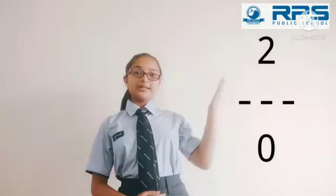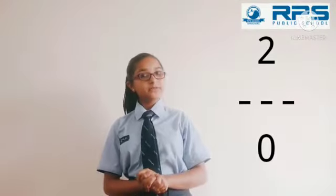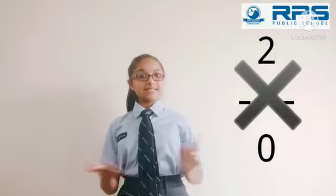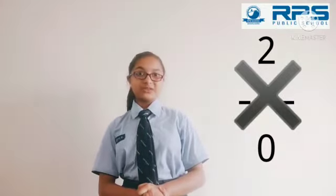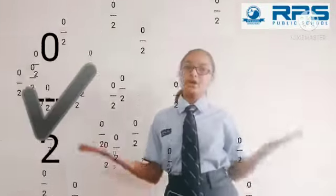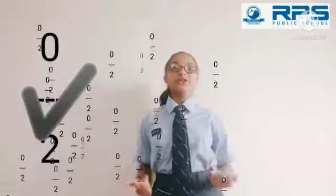If we take an example which is 2 upon 0, will it be a rational number? No, because in this number Q is equal to 0. But if we take a number which is 0 upon 2, it will absolutely be a rational number, because in this number Q is not equal to 0.